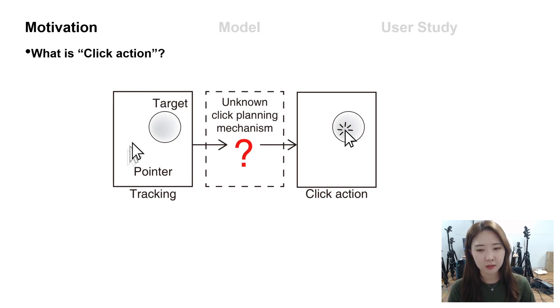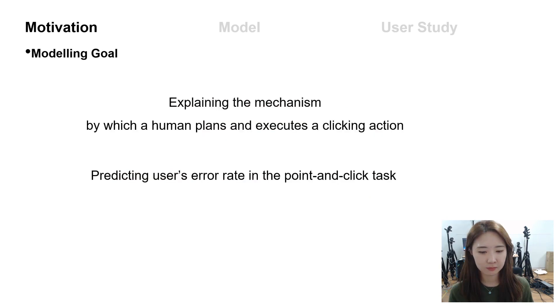As the title of this paper suggests, our findings show that humans plan a clicking action while performing the tracking task. In this paper, we present a model that explains the mechanism by which human plans and executes a clicking action and predicting users' error rate in the point-and-click task.